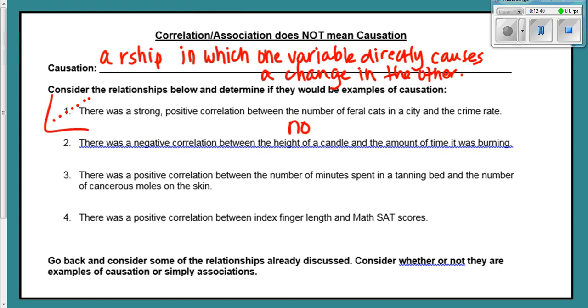Number two, there was a negative correlation, going down, between the height of a candle and the amount of time it was burning. Well, does the time cause the height to go down? Well, yes, in a way. Now, it's not literally time ticking by, but it's the fact that the minutes that go by means that the wax is given more time to melt. So yes, those two are related in a sense that one causes the other. The time going by causes the height to go down. Three, there's a positive correlation between the number of minutes spent in a tanning bed and the number of cancerous moles on the skin. So again, positive relationship here. Now, this one, you kind of need a little bit more information on, but in general, do we think that maybe the minutes spent in a tanning bed is what caused the cancerous moles? Yes, probably. One might cause the other in that situation.